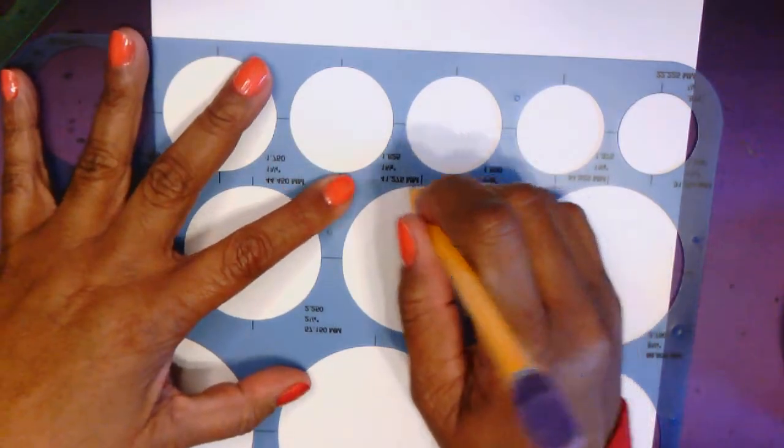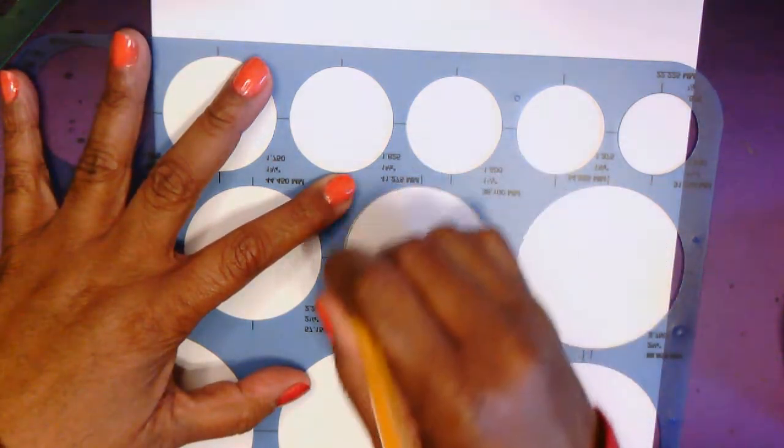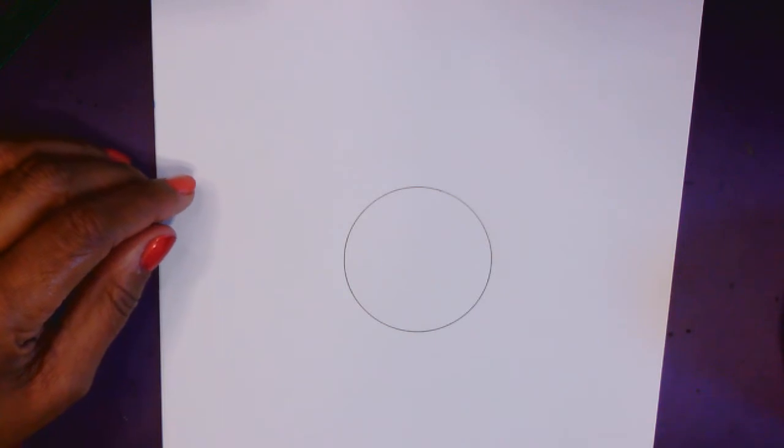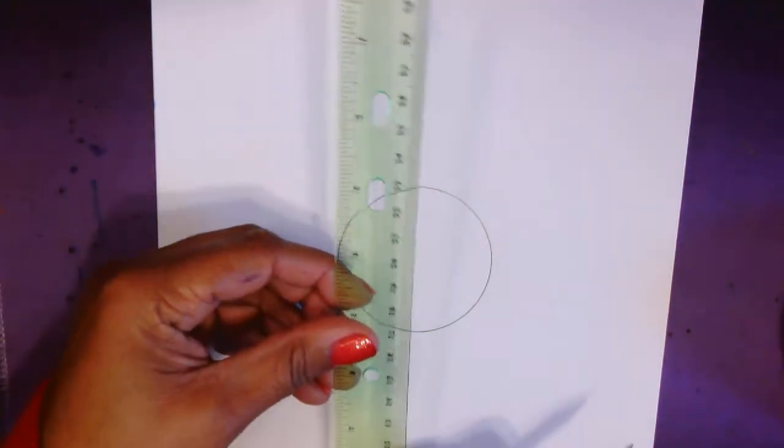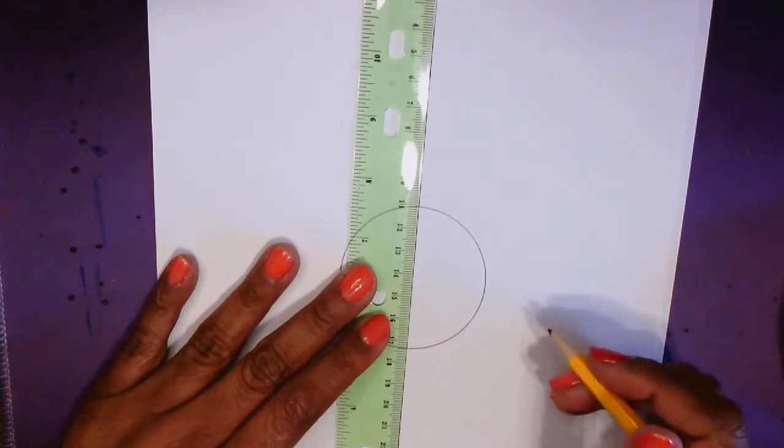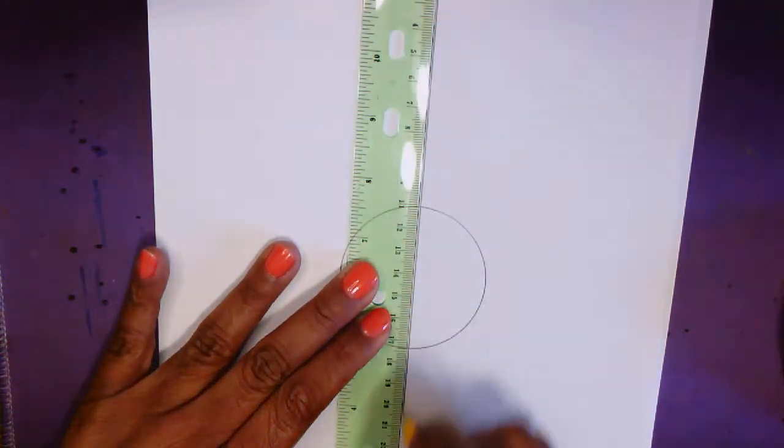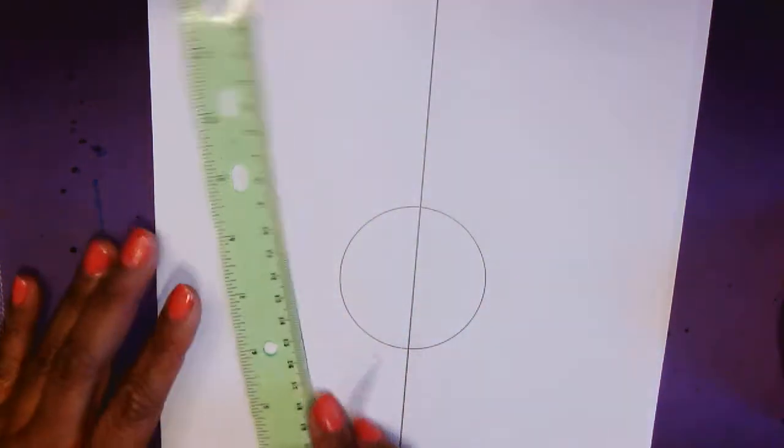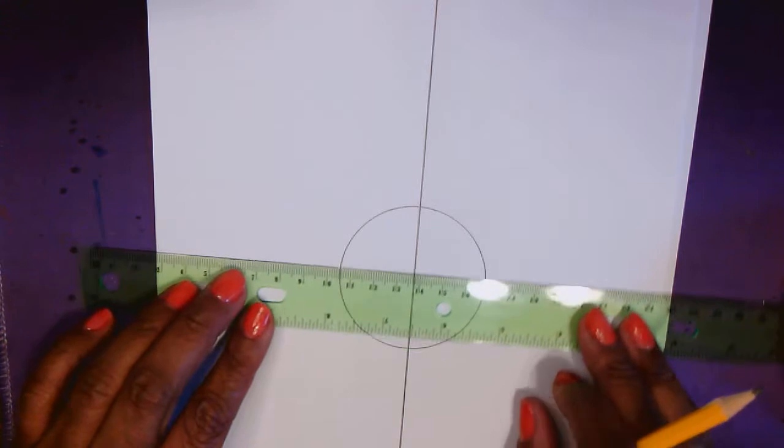So you can either trace something or use a template. Can you see that pencil mark okay? So you're going to draw a circle. Then with a ruler you're going to draw a straight line through the middle from the top of your paper to the bottom of your paper. Now you're using pencil so you'll be able to erase any lines that you don't need.